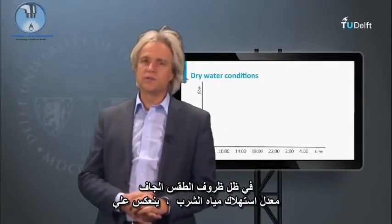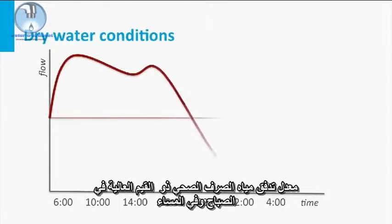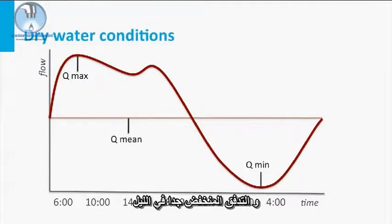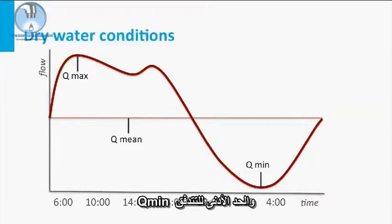Under dry weather conditions, the drinking water consumption rate is reflected by the generated sewage flow, with high peaks in the morning and in the evening, and a very low flow in the night. We therefore distinguish an average or mean flow, a Q-max, a maximum flow, and a minimum flow, a Q-min.